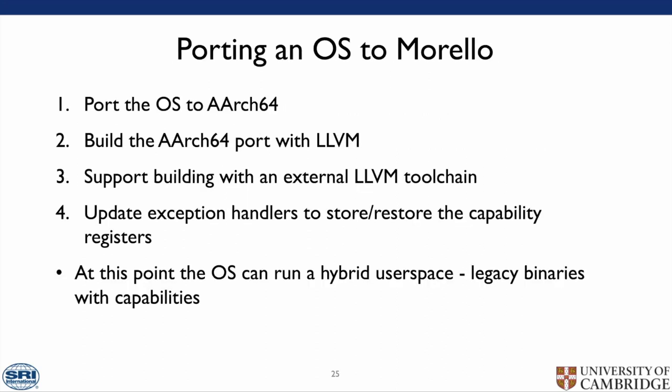What does it take to port an operating system to Morello? First, you need to port to AArch64. This was simplified in FreeBSD as I had previously worked on this as part of funding by the FreeBSD Foundation. You then need to make sure your AArch64 port is buildable with LLVM, as that is the toolchain we use. You need to support building with an external LLVM, as LLVM can be updated frequently. Finally, you will need to update your exception handlers to store and restore capability registers on exception entry and exit. At this point your operating system can run a hybrid userspace — that is, legacy binaries with some use of capabilities.